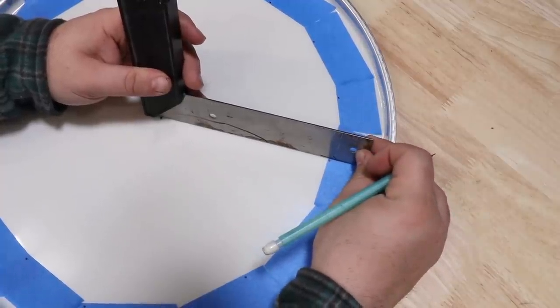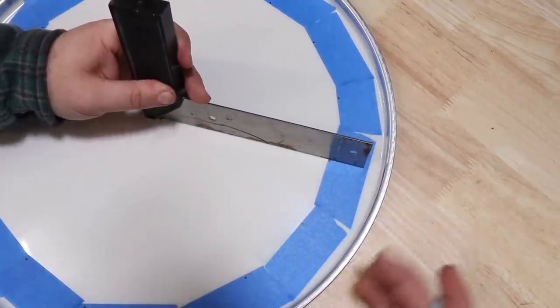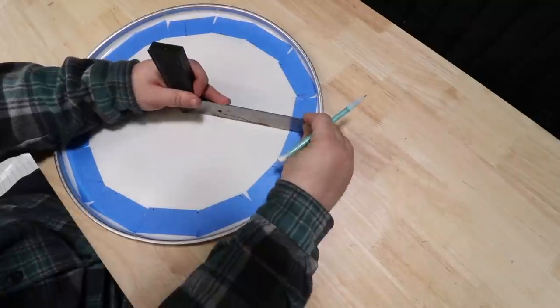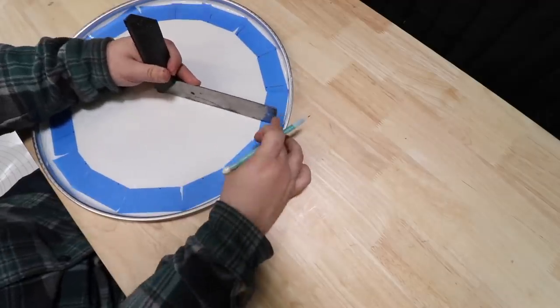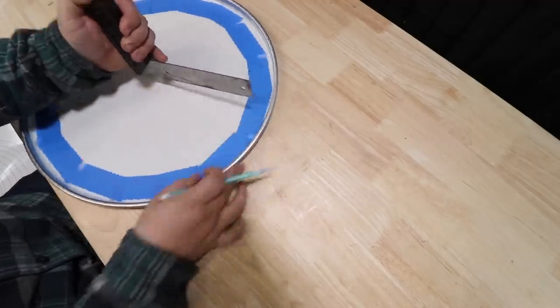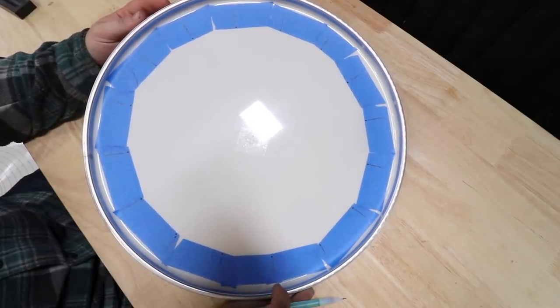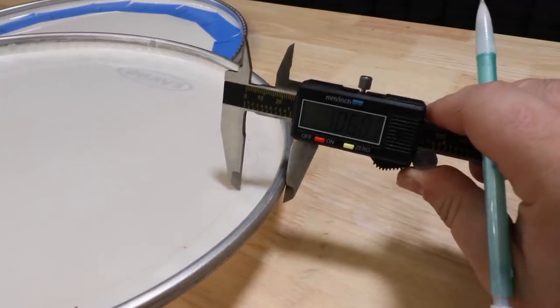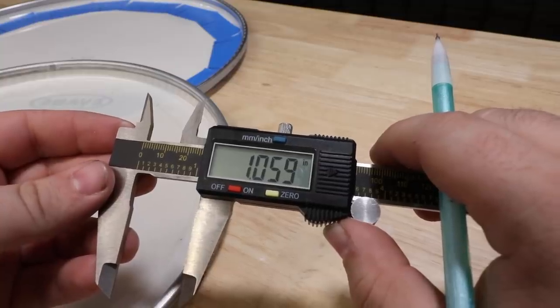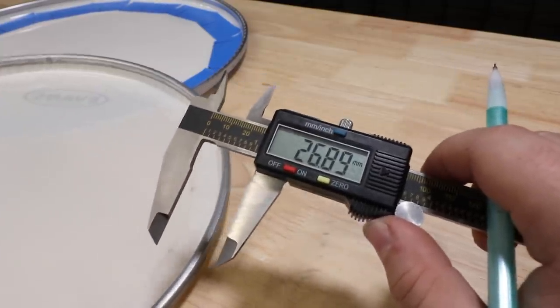From there, I'll take a straight edge, line it up with the center and outer marks, and extend those lines. Then I took a set of calipers and measured the actual HD-Dry and transferred that measurement onto the heads.